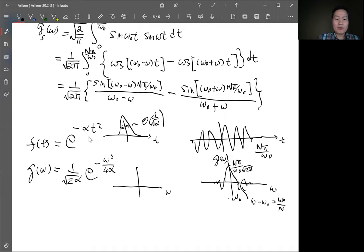But then this width in the omega, plotting versus omega, this peak will be of the order of square root of omega, of square root of alpha. So the width is kind of inverse for each other. If the width here is large the width here is small, if the width here is small the width here is large.